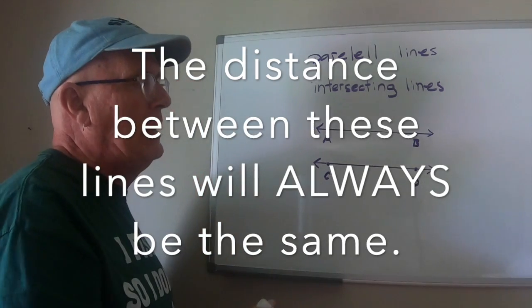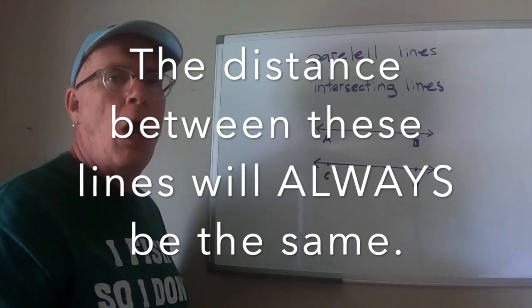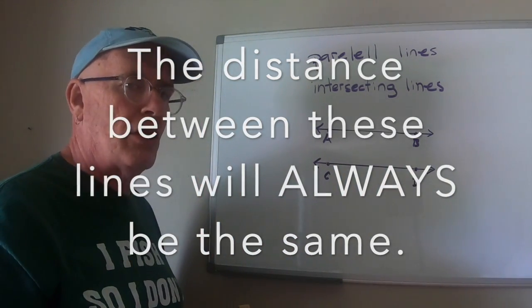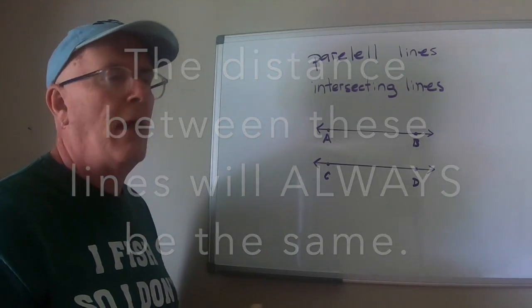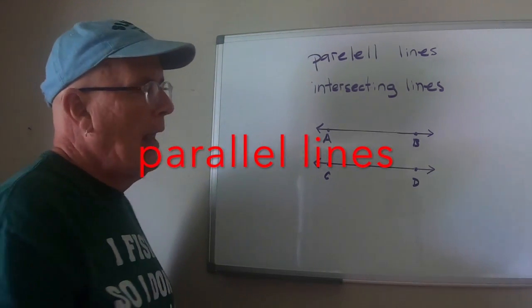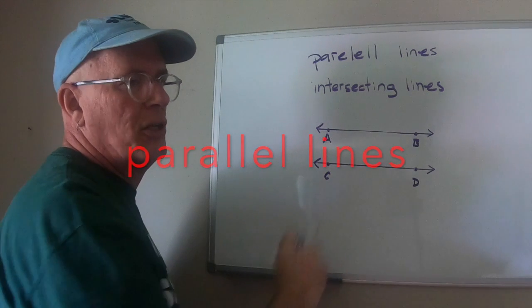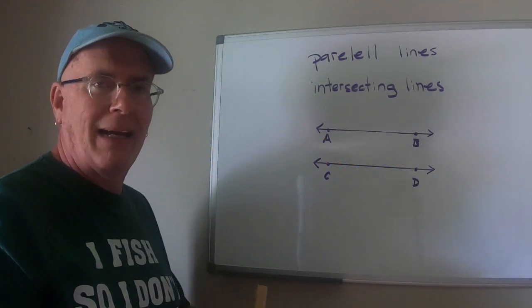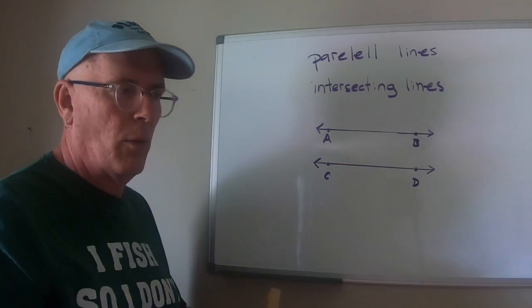So what that means is that these two lines will always be the same distance apart no matter where you are on the line. That is called parallel and because they remain at the same distance apart, they will never intersect. They will never cross.